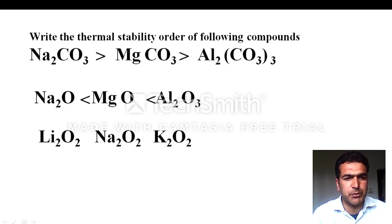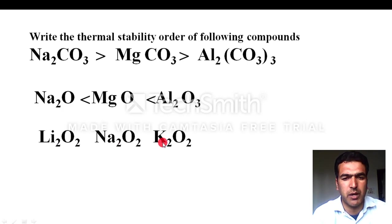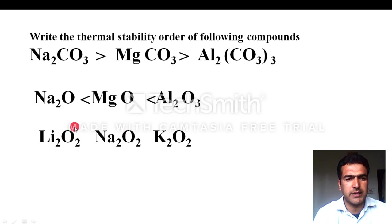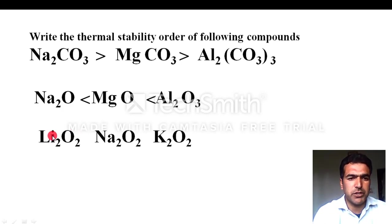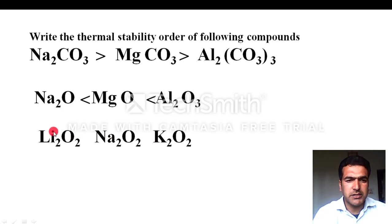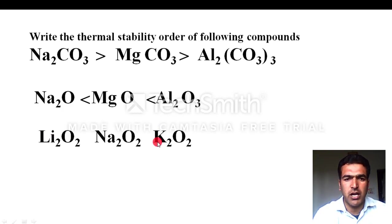If you are asked the thermal stability order of peroxides — lithium peroxide, sodium peroxide, and potassium peroxide — the peroxide anion (O2²⁻) is polyatomic. For polyatomic anion compounds, thermal stability depends on polarization. Lithium has the smallest cation radius and the greatest polarizing power, so it causes the most polarization. Therefore, thermal stability increases with cation size: K2O2 > Na2O2 > Li2O2.